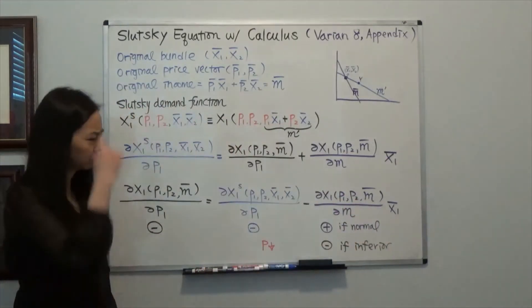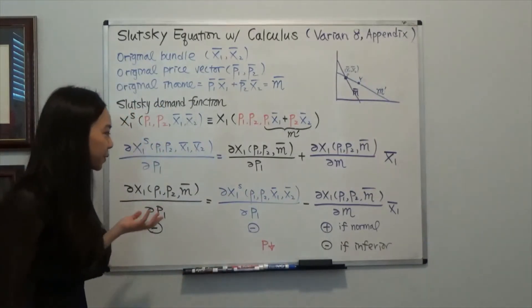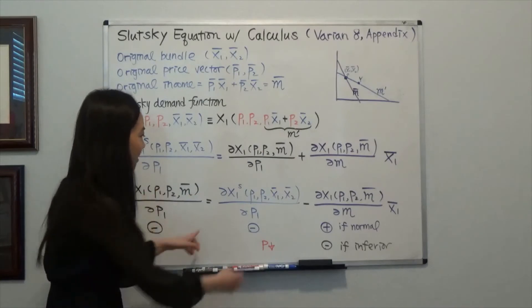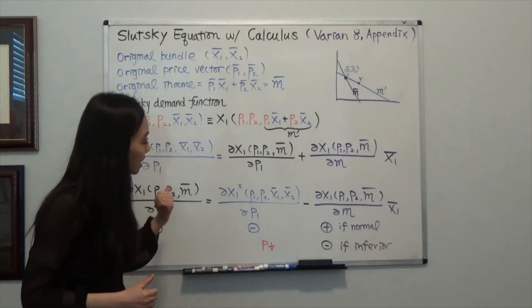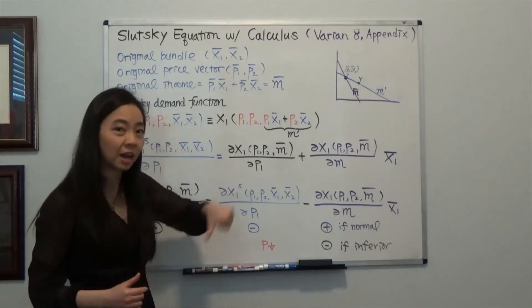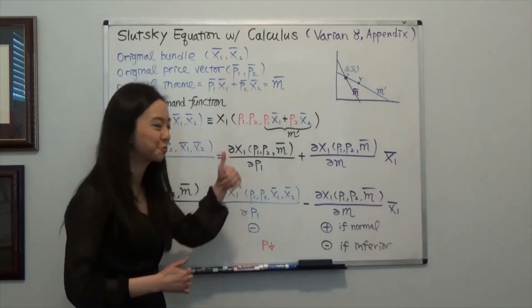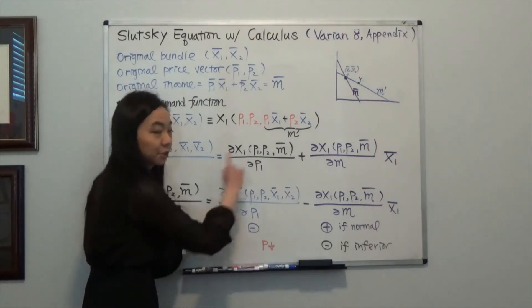So you'll be asking, why is there a negative sign here? Let me explain. So suppose the price of good one goes down so that you can see that substitution effect is always negative. What does that mean? That means, hey, if your price of good one goes down, then substitution effect is going to ask you to buy more of good one. That's why this is always negative. This is the substitution effect.